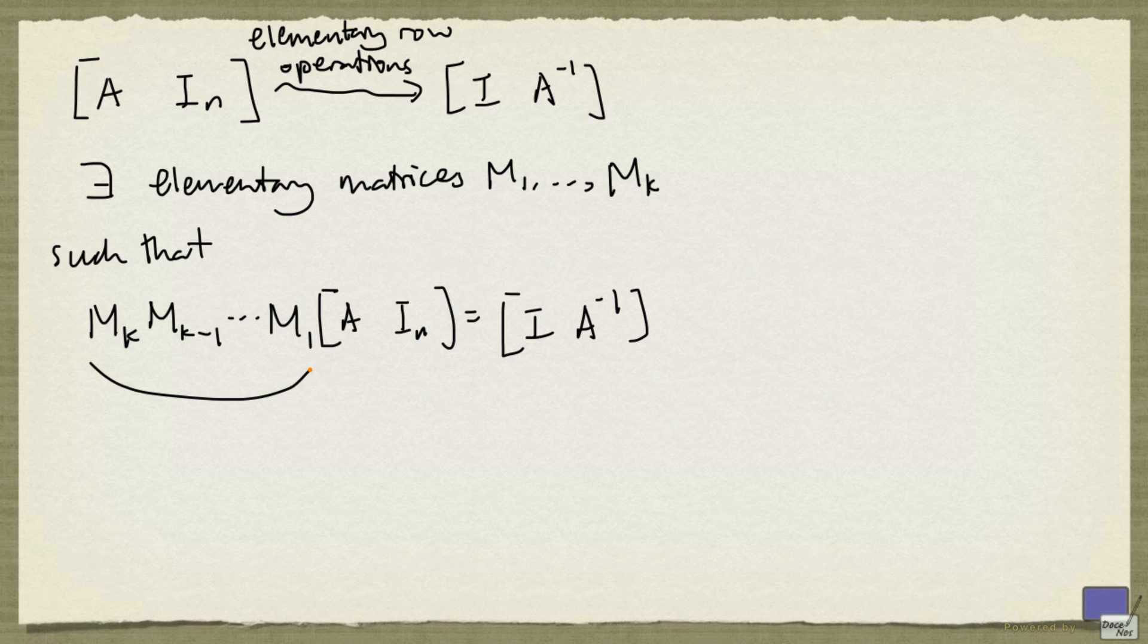Now, what this means is, this product times A will give us the identity matrix, so this is In. And this product times the n by n identity matrix will be precisely A inverse. So we can write down A inverse is equal to Mk times all the way down to M1.